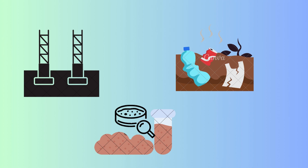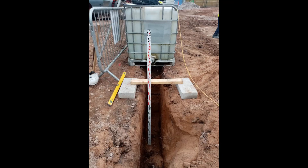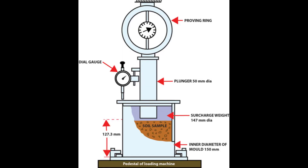Various methods including the hand shear weight test, soak away test, and CBR testing are employed within trial pits to gather soil samples and assess ground characteristics in a more extensive way.